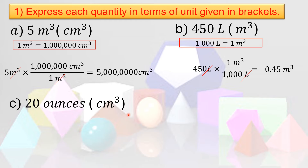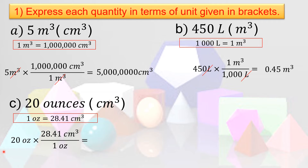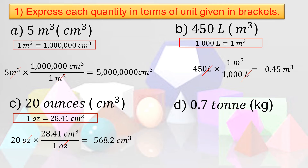Now let us convert 20 ounces to cubic centimeters. We know that 1 ounce equals 28.41 cubic centimeters. So: 20 ounces times 28.41 cubic centimeters over 1 ounce. Cancel the ounces, then multiply 20 times 28.41, which equals 568.2 cubic centimeters.